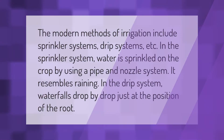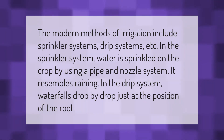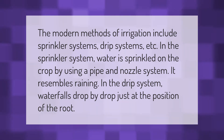Modern methods of irrigation include sprinkler systems and drip systems. In the sprinkler system, water is sprinkled on the crop using a pipe and nozzle system, resembling rainfall. In the drip system, water falls drop by drop just at the position of the root.